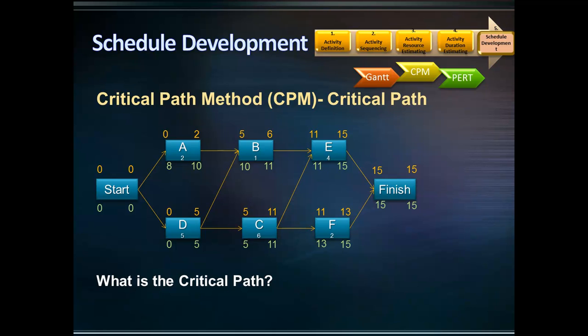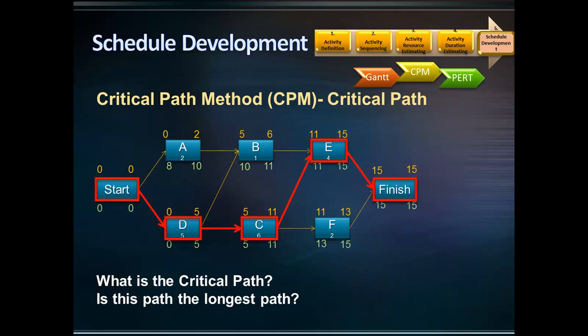What is the critical path in our example? To answer this, you need to calculate the total float for each activity. The activities with zero total float are on the critical path. Activities D, C, and E have zero total float. Therefore, the critical path is Start → D → C → E → Finish. The length of the critical path is 15 days.